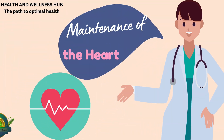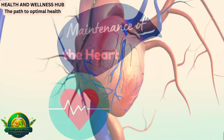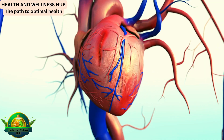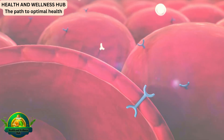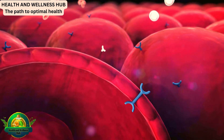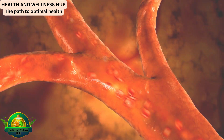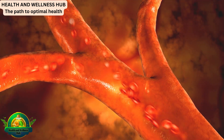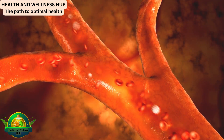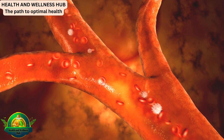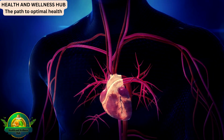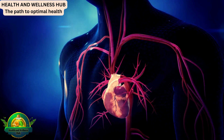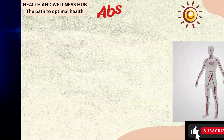It's worth noting that the heart requires its own supply of oxygen and glucose, which it receives through coronary arteries. These arteries branch off the aorta, feeding the heart's muscle and cells.